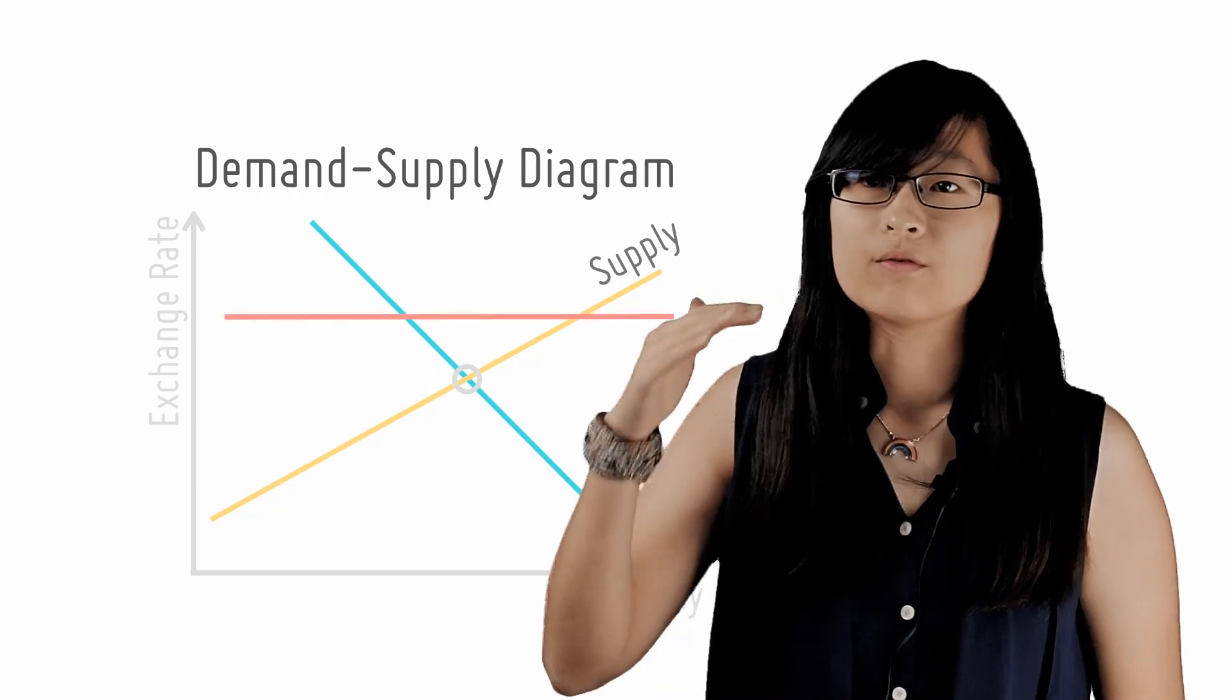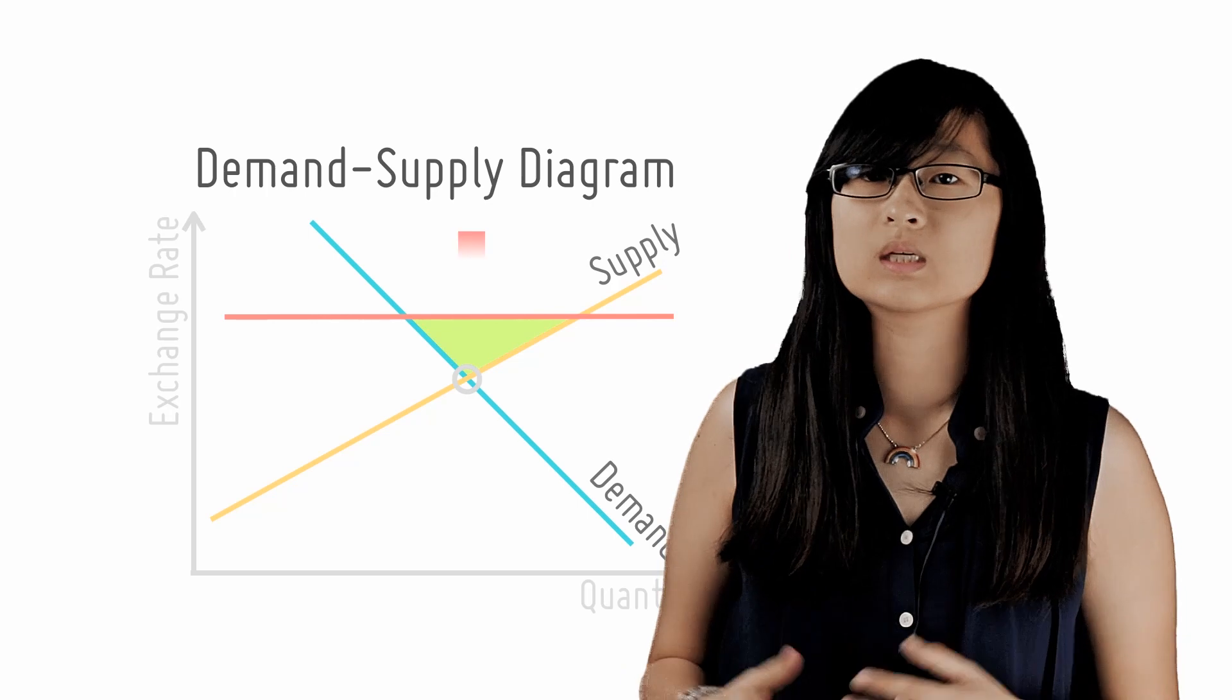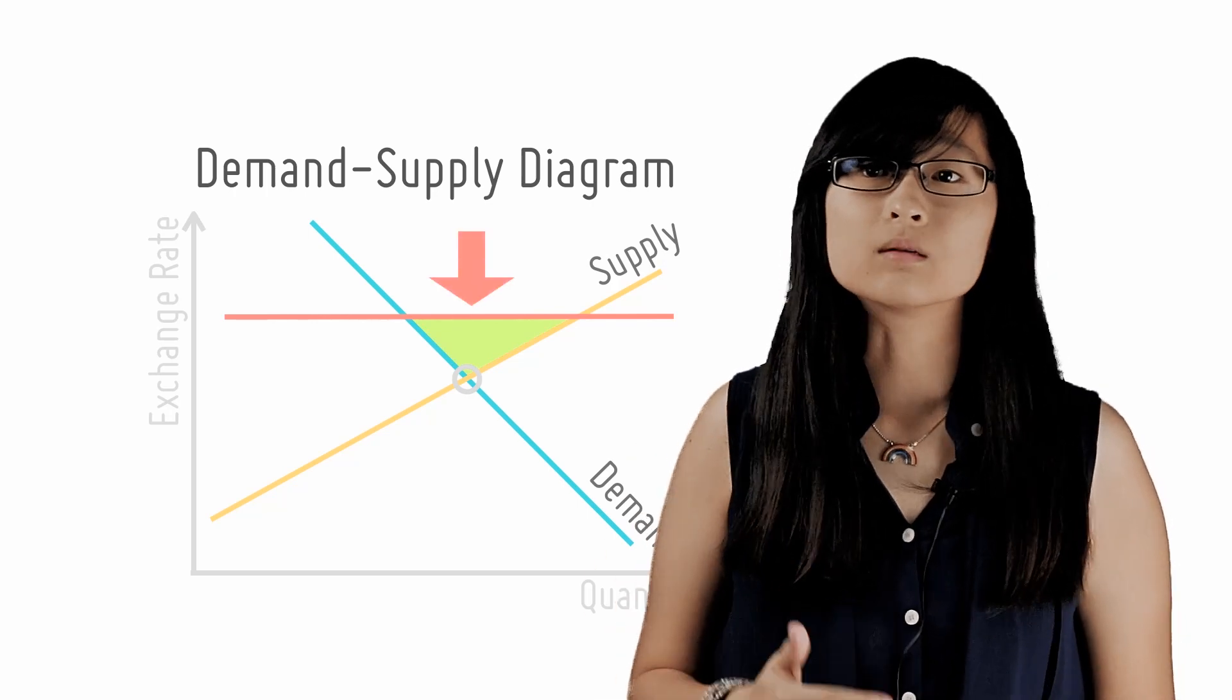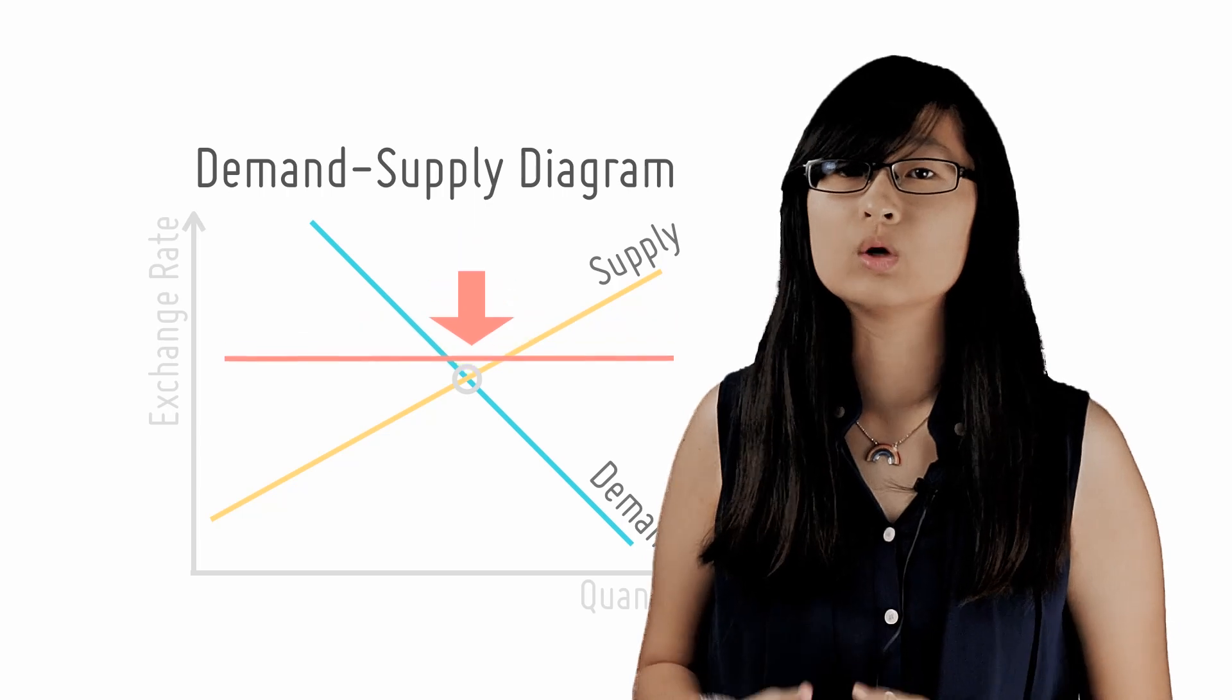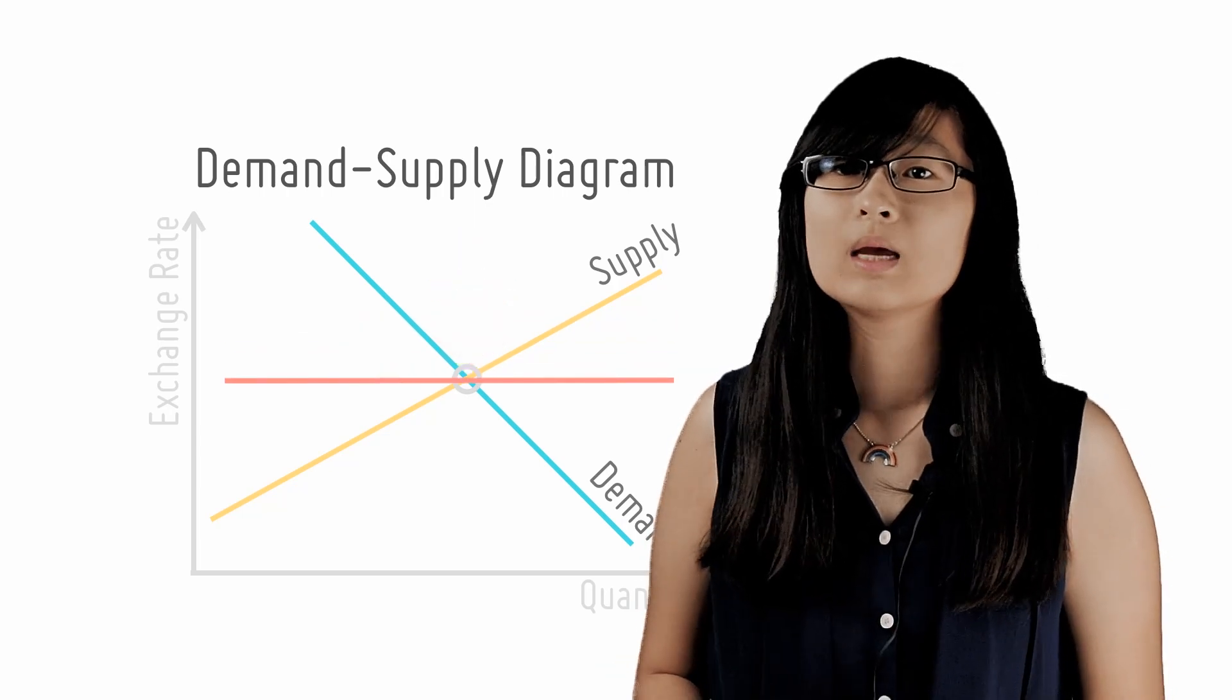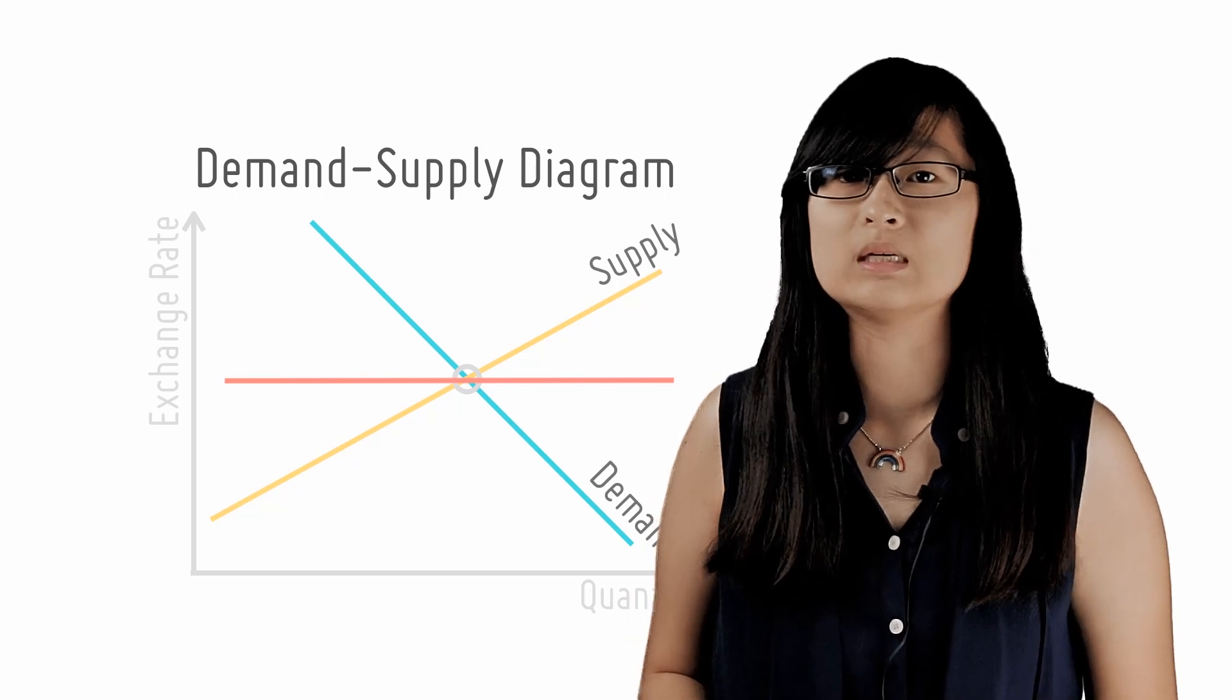Let's say the exchange rate is above the equilibrium price. From the graph, we can see that there is a surplus of Singapore dollars. This exerts a downward pressure on the external value of the Singapore dollar in relation to the US dollar, causing the Singapore dollar to depreciate against the US. This happens because people are willing to give up more Singapore dollars in exchange for each USD due to the surplus.